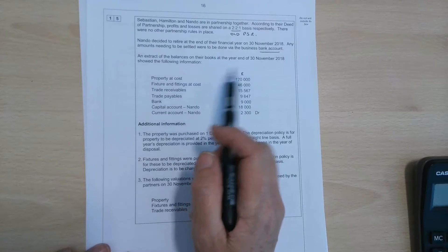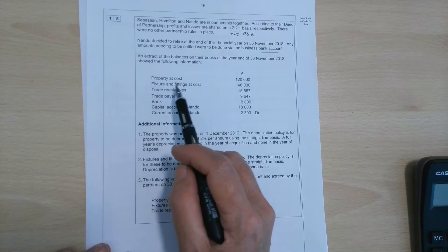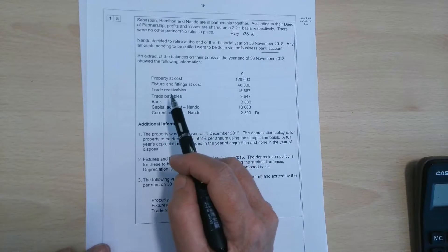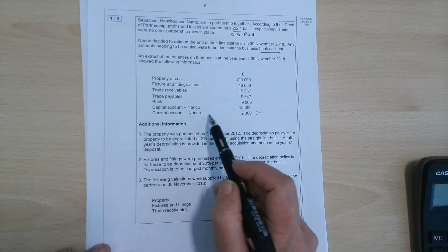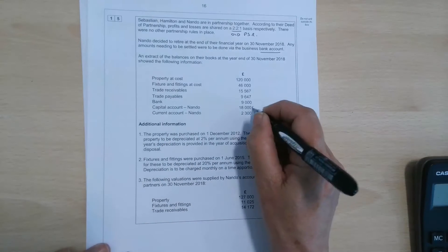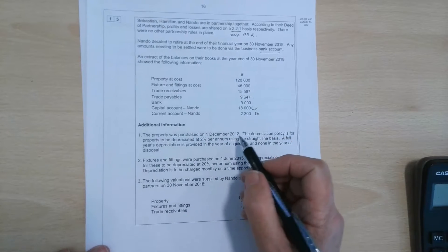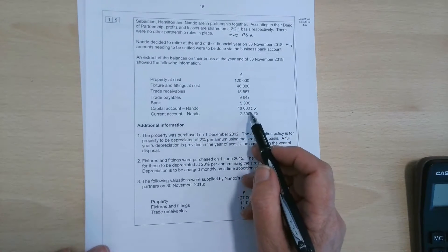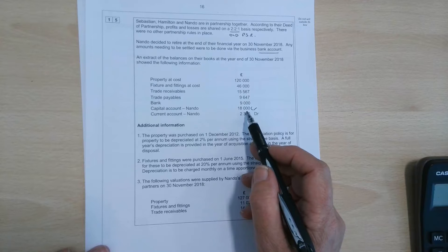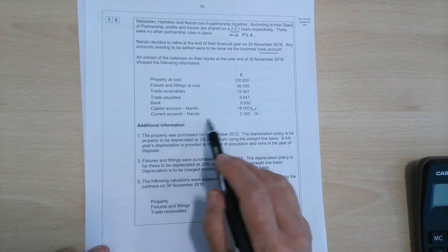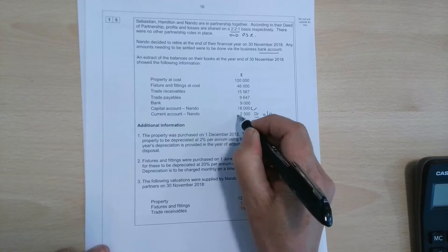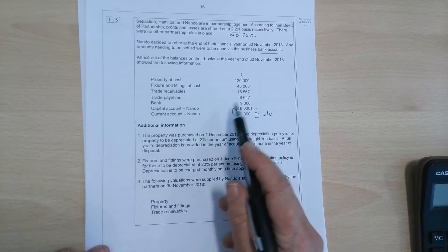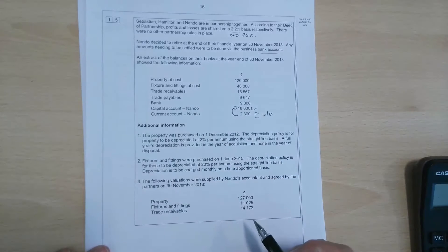So extract of balances on the books. We've got some property at cost, fixtures and fittings, trade receivables, trade payables, money in the bank, and then capital account balance. That's a credit balance. Remember capital is always a credit. Think about the DEARCL: L is for capital, liabilities, income, and payables. And the current account in this case is a debit balance because it's overdrawn. We're going to be writing that off anyway because he's retiring. We'll be writing off the current account balance into Nando's capital account balance.